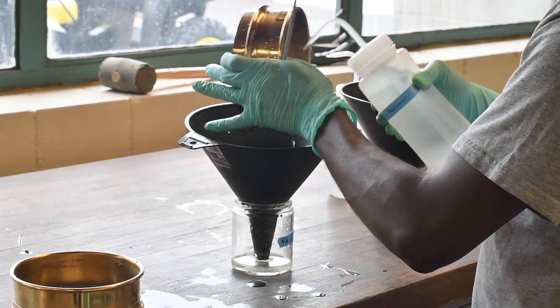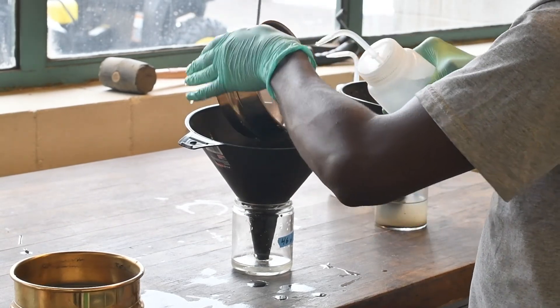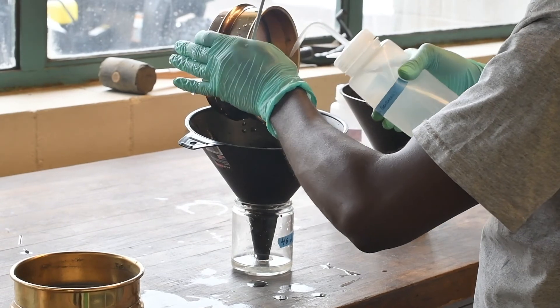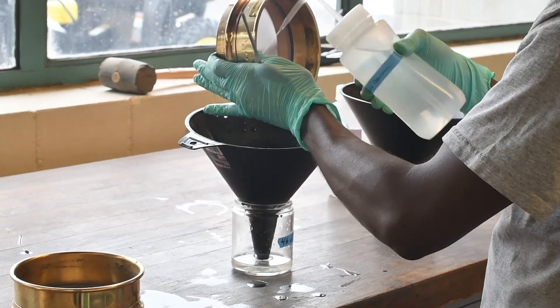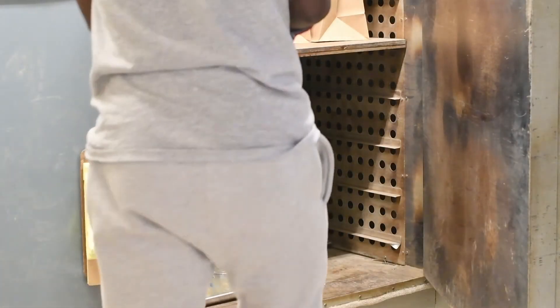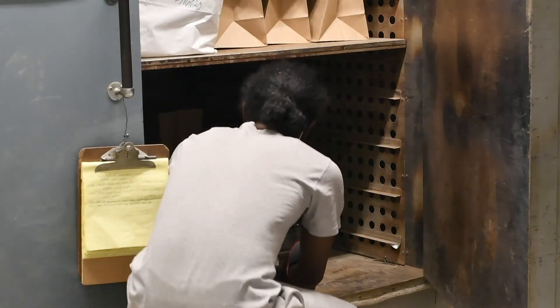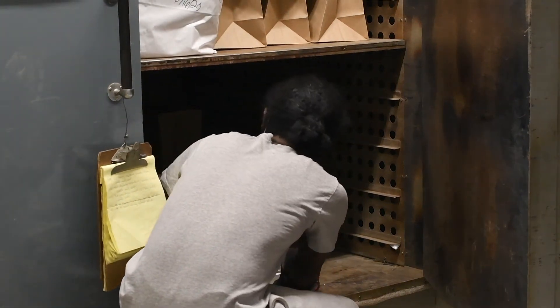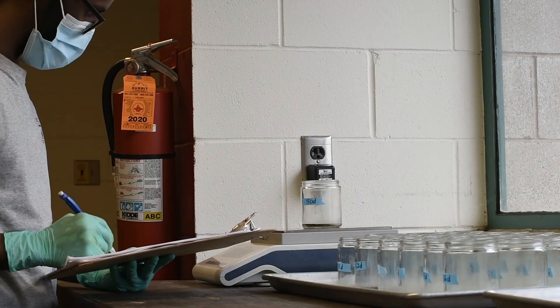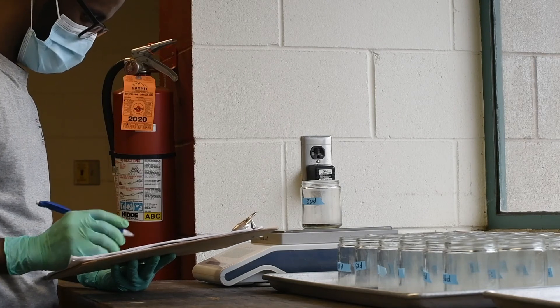Like before, use the wash bottle to rinse all particles back into the same jar it came from and return it to the oven to dry. When the sample is dry, remove it from the oven and again return it to room temperature. Then, like before, weigh and record the mass of the sample.